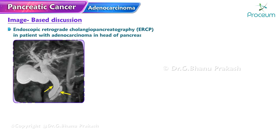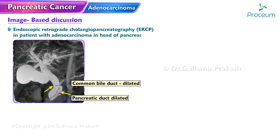An ERCP image of a patient with adenocarcinoma in the head of the pancreas shows the common bile duct dilated proximal to a stricture. In addition, the pancreatic duct is dilated due to obstruction by the tumor. The dilation of both the common bile duct and the pancreatic duct is known as the double duct sign, a finding that is highly suggestive of malignancy.